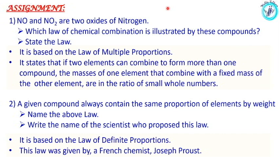One assignment question: NO and NO₂ are two oxides of nitrogen. Which law of chemical combination is illustrated by these compounds? This is how we identify the law of multiple proportions. It states that if two elements can combine to form more than one compound, the masses of one element that combine with the fixed mass of other elements are in the ratio of small whole numbers.